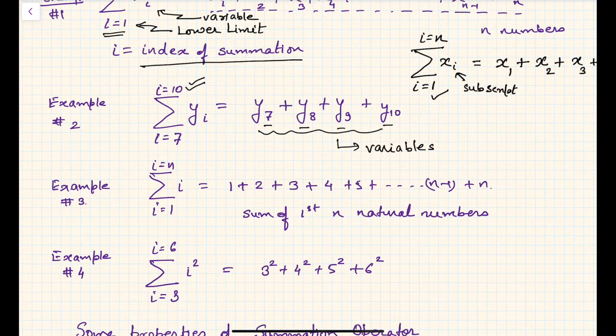In example three, summation of i from i equals 1 to n means the value of i keeps changing: first i is 1, then 2, then 3, then 4, then 5, likewise till n minus 1 and finally n. This is the sum of first n natural numbers.